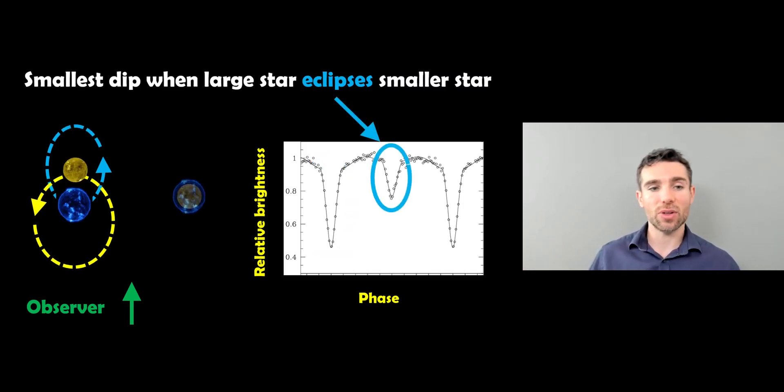And in the other way around, when the big star then eclipses the smaller star, you then get the smaller dip. So you get a big dip, a little dip.